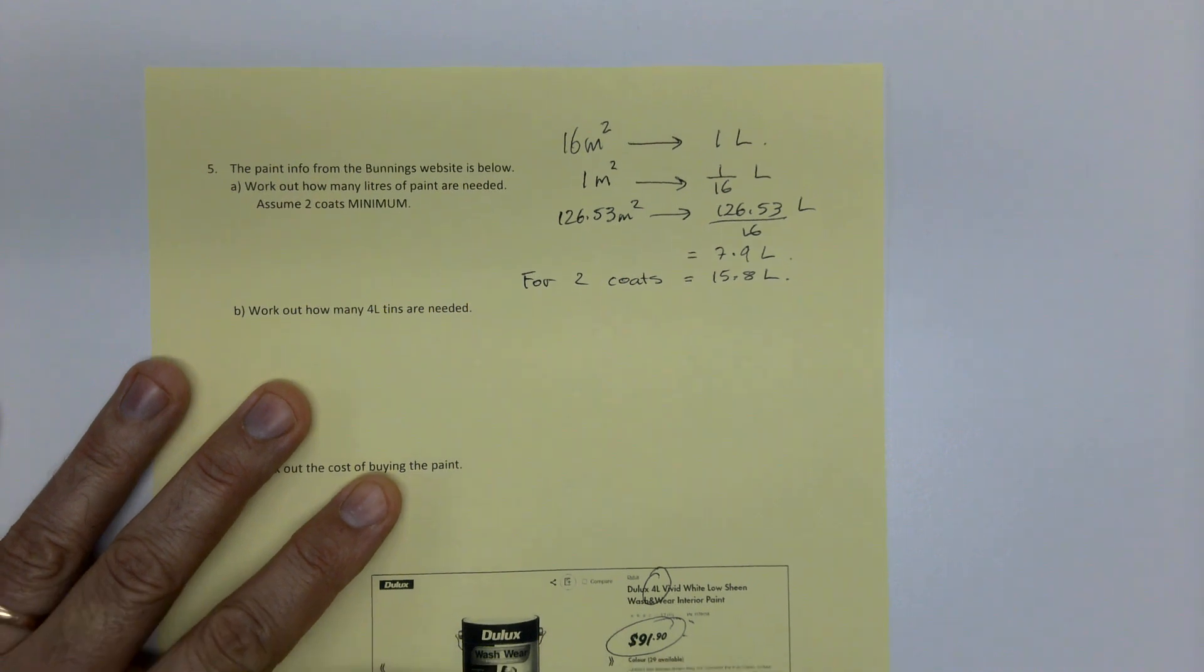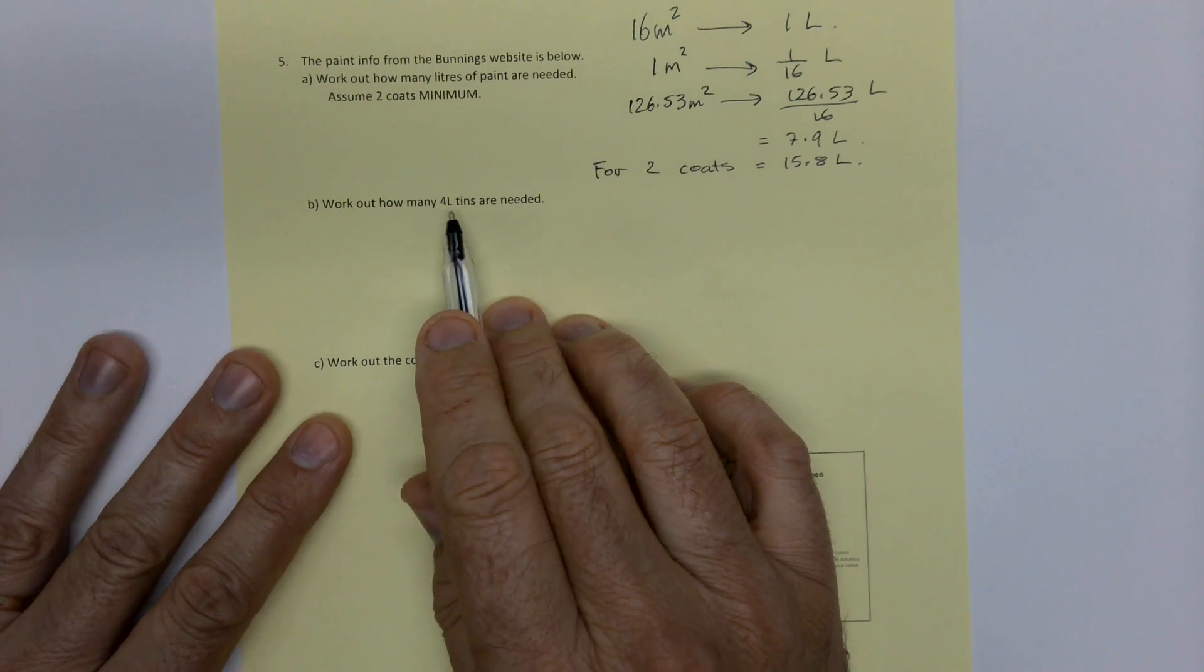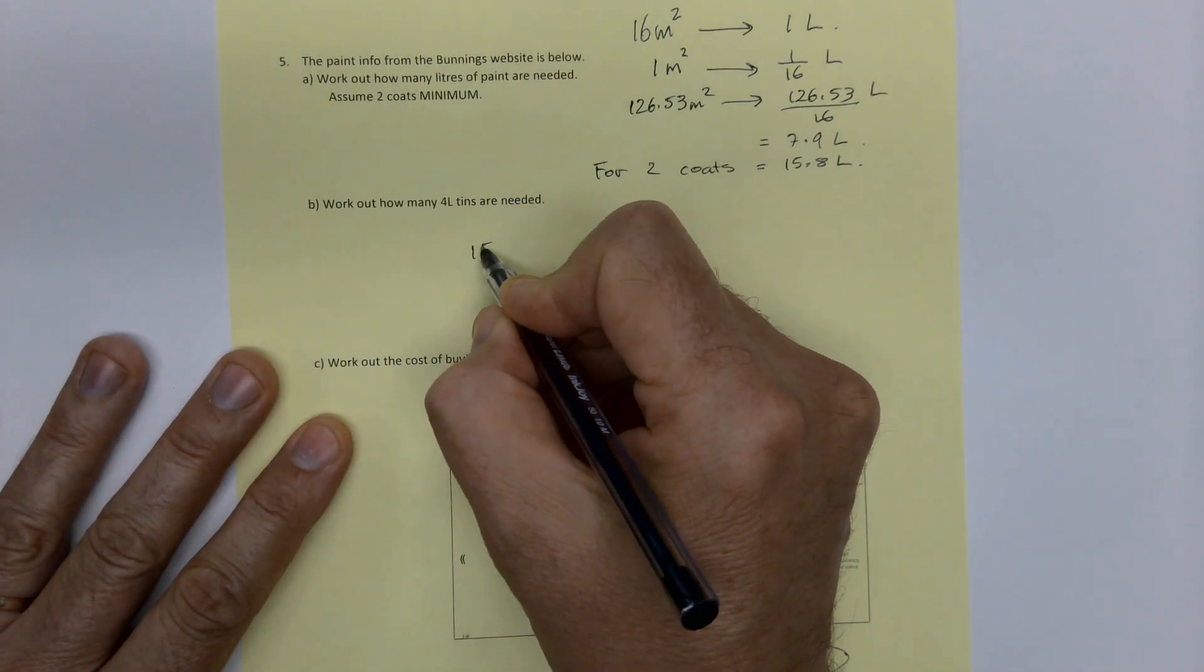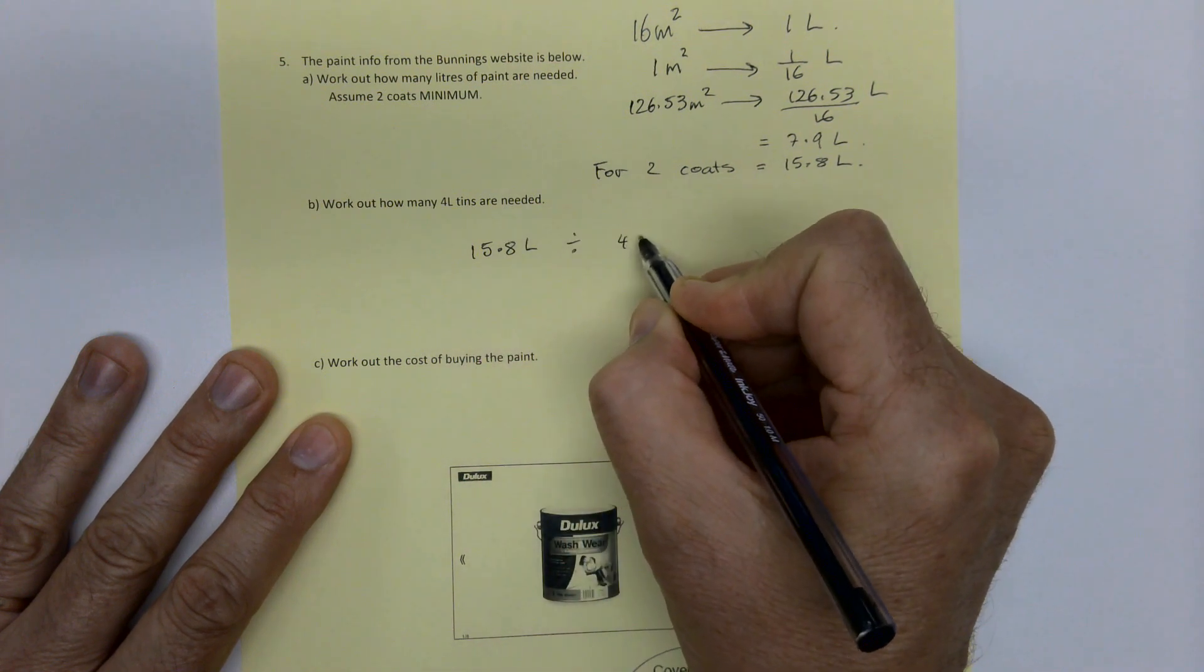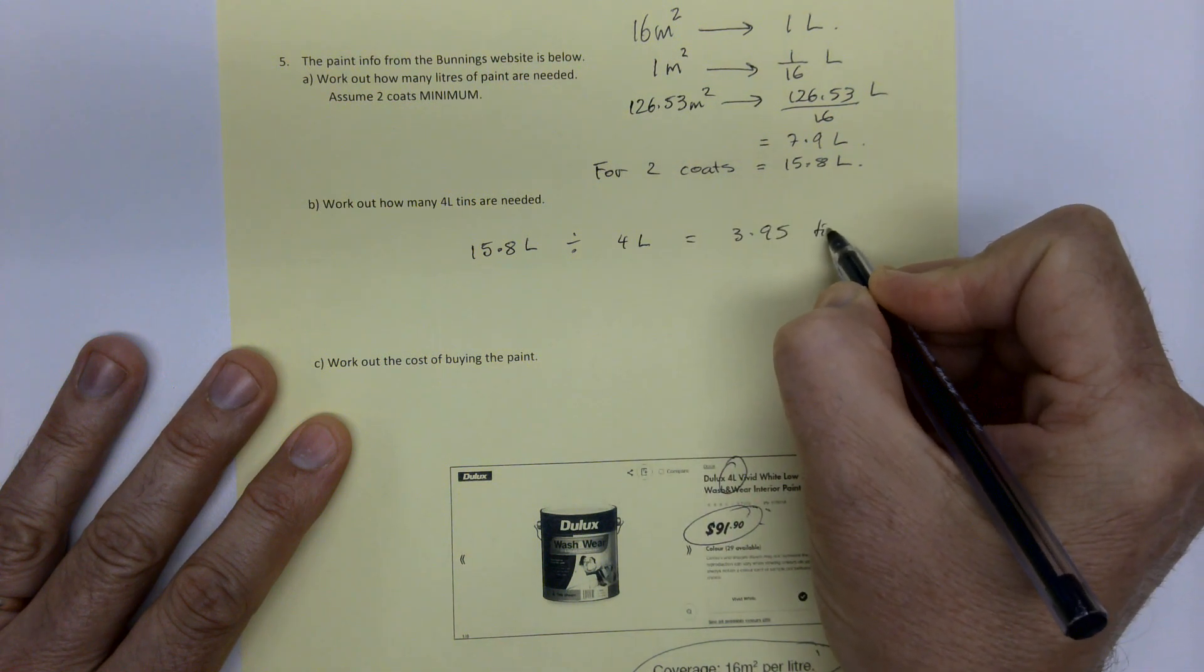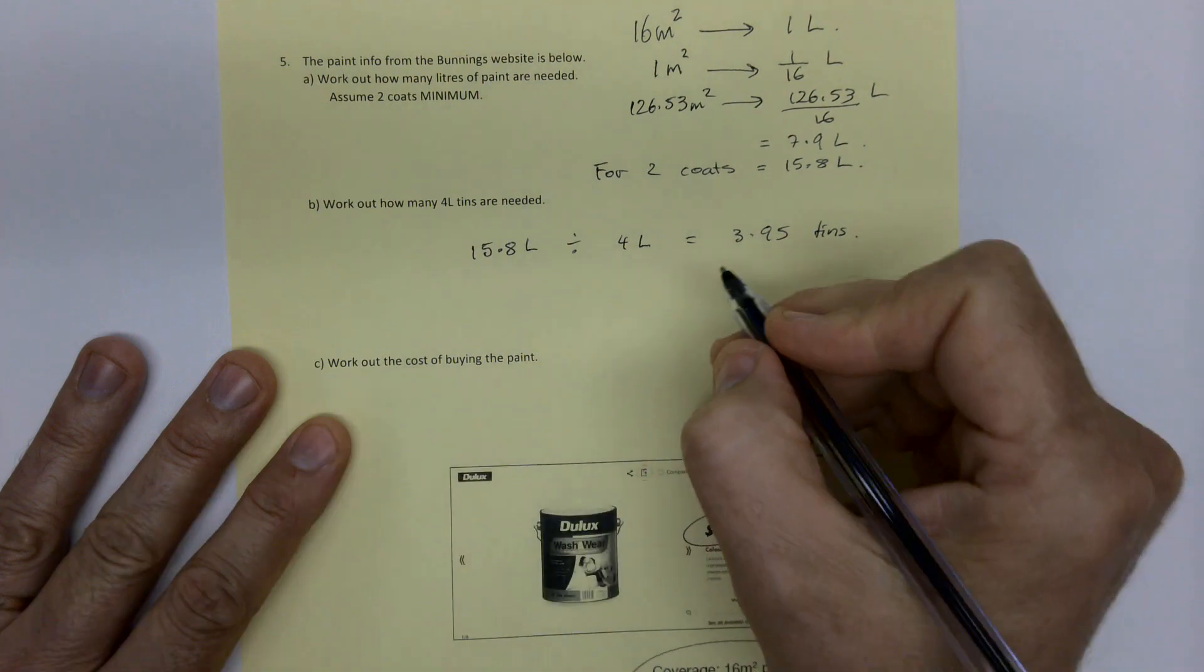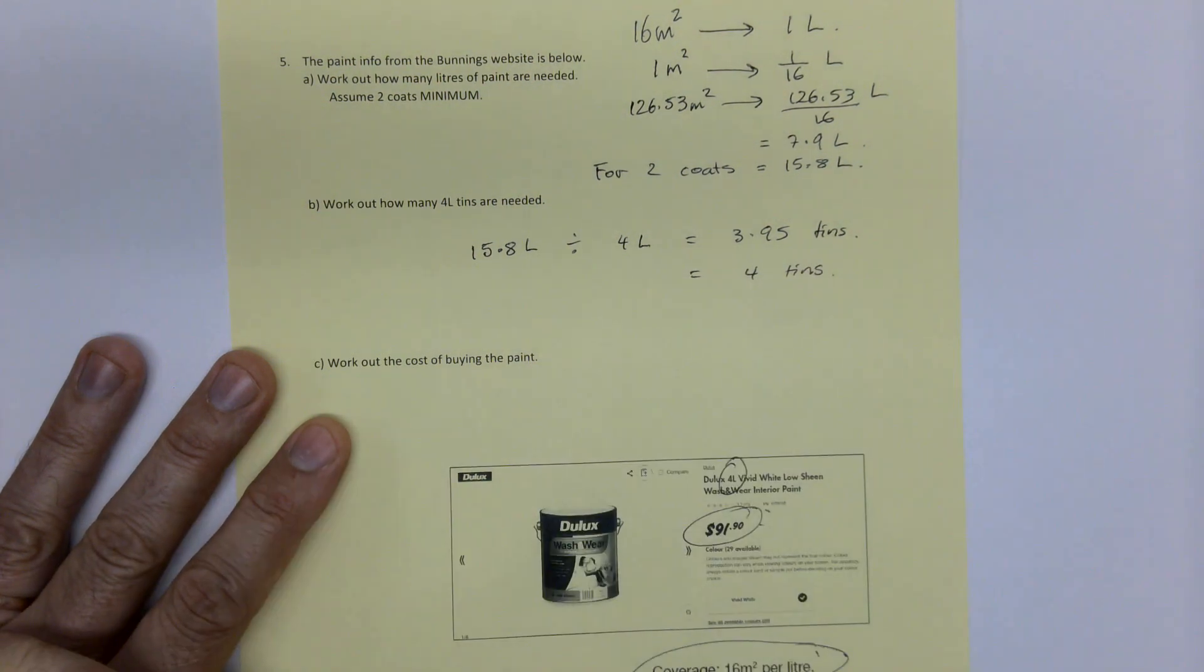So I'm buying this in four liter tins. How many tins are needed? How many four liter tins are needed? So I go 15.8, that's the total number of liters I need, divided by four liters. That's 3.95 tins. I can't buy 0.95 of a tin. I can only buy four. So I need four tins. So I know I need to walk into Bunnings and buy four tins of this paint in order to do two coats of the walls and the ceilings.